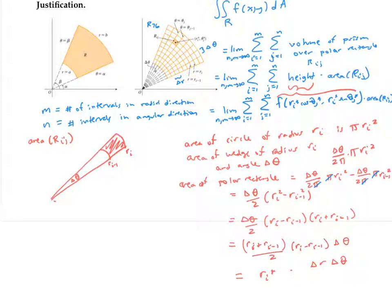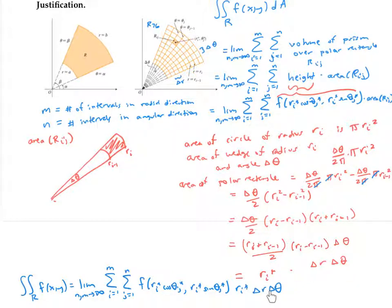So in my limit of Riemann sums, I can replace this area with the formula r_i* times Δr Δθ. As I take the limit of Riemann sums and pass to integral notation, this Δr Δθ becomes my dr dθ. The r_i* and θ_j* just become r and θ, and my summation becomes my integral sign. So notice that this extra factor of r in my area element came from the calculation of the area of a polar rectangle.